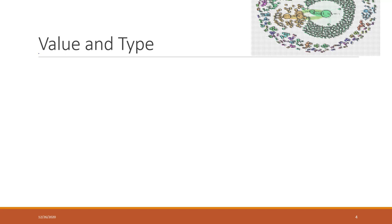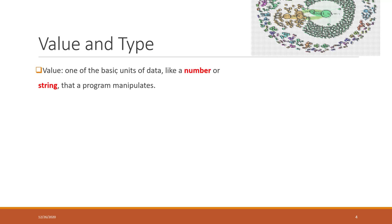Let's talk about value and data type. A value is one of the basic units of data — for example, numbers and strings are all types of values that a program can manipulate. A type is just the category of the value, so data type means the categorical grouping of values.